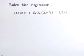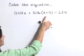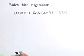Solve the equation: 0.08x plus 0.06 times the quantity x plus 9 is equal to 1.24.